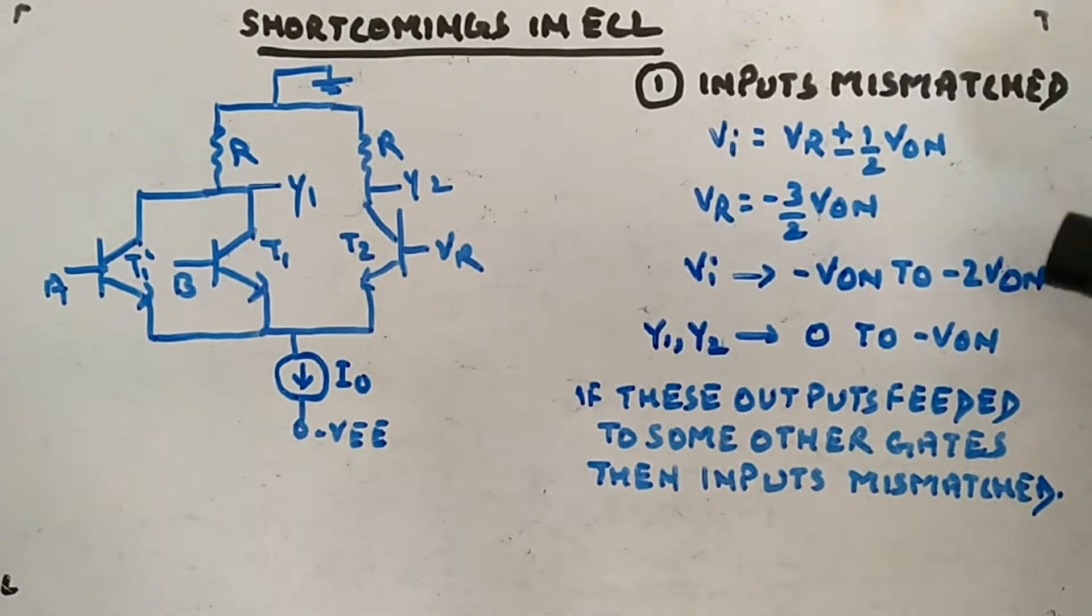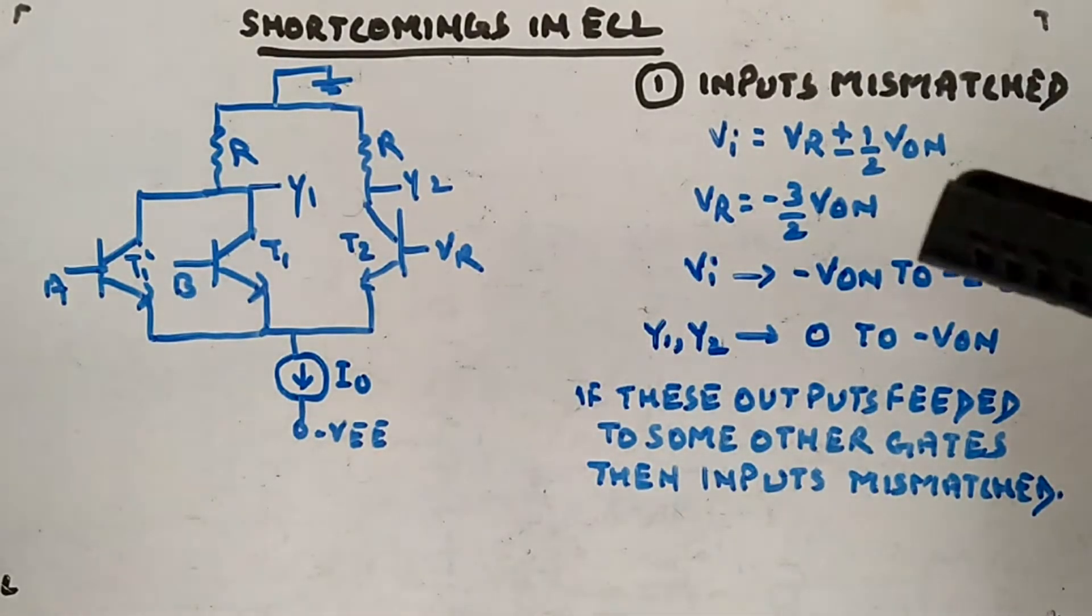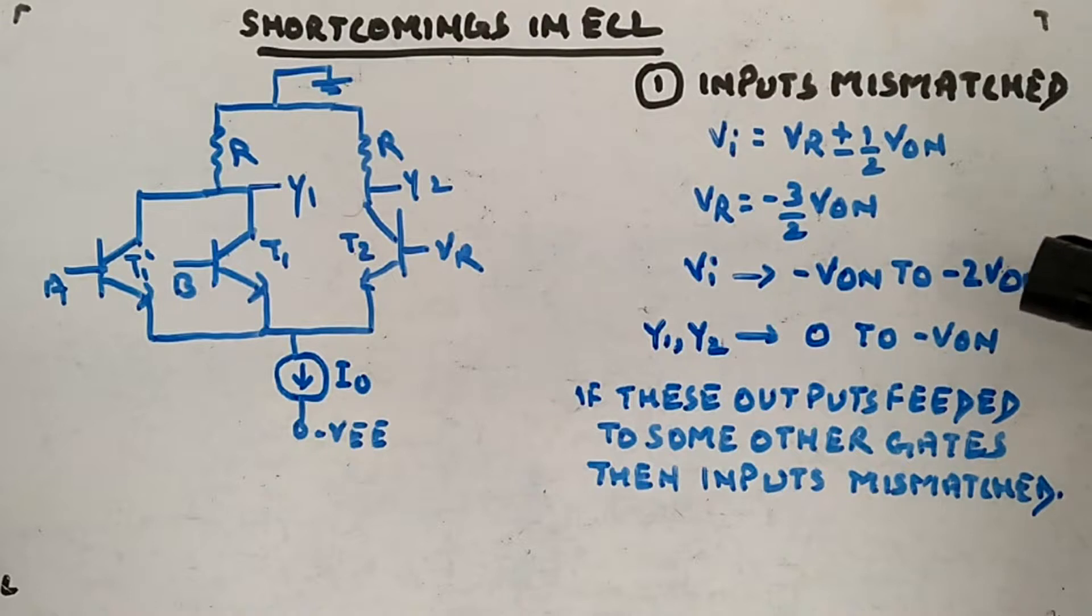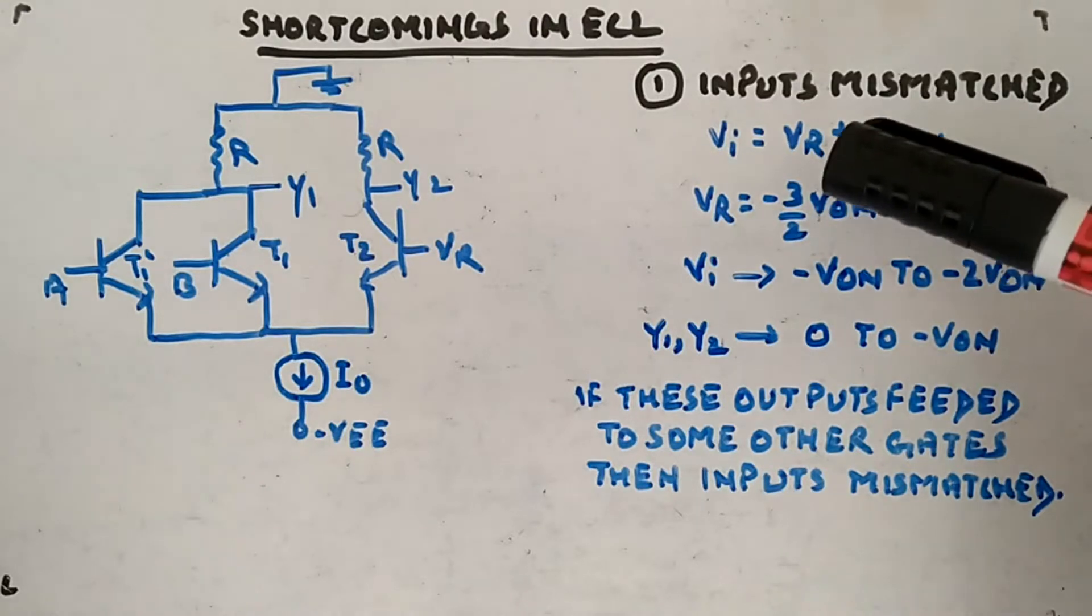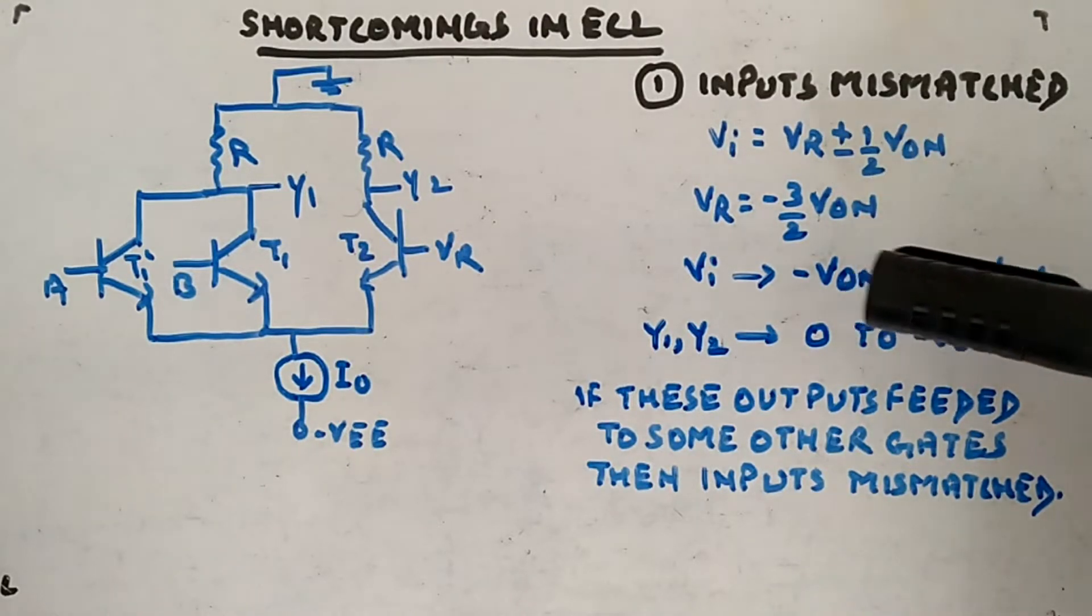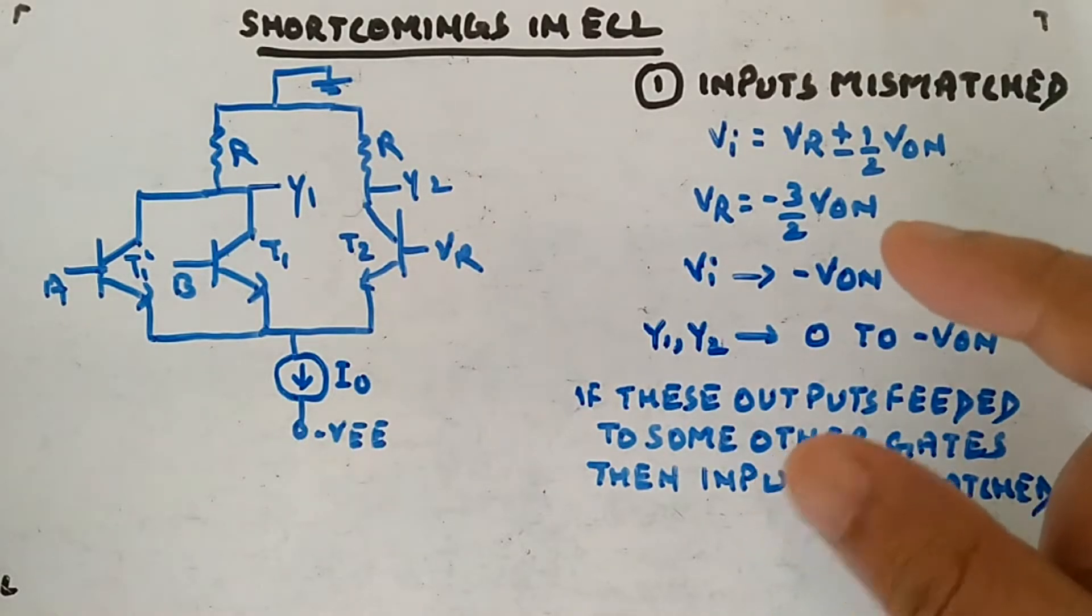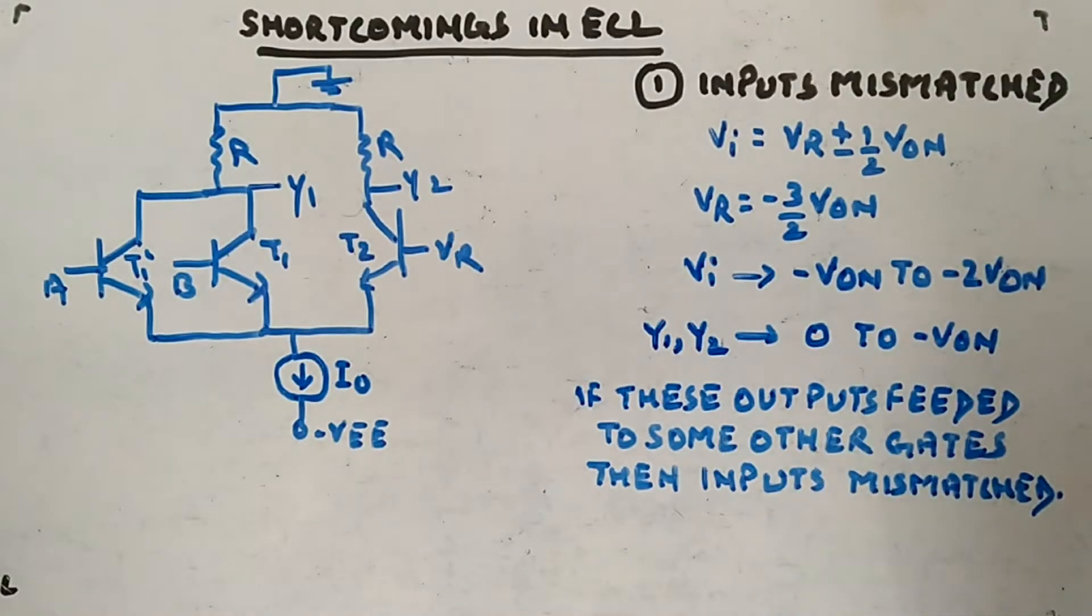If you plug this value of VR here, your input will be going from minus VON to minus 2 VON depending upon which sign you take. If you take minus sign it will go to minus 2 VON, if you take plus sign it will go to minus VON. So your input range is between minus VON to minus 2 VON.